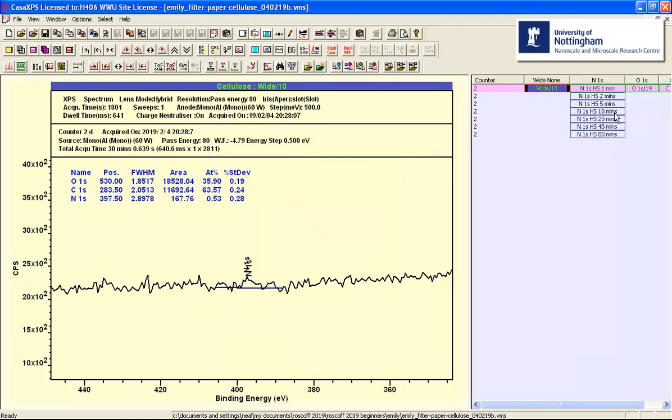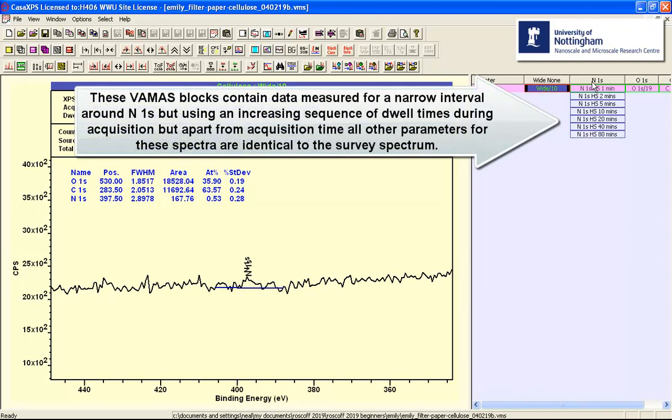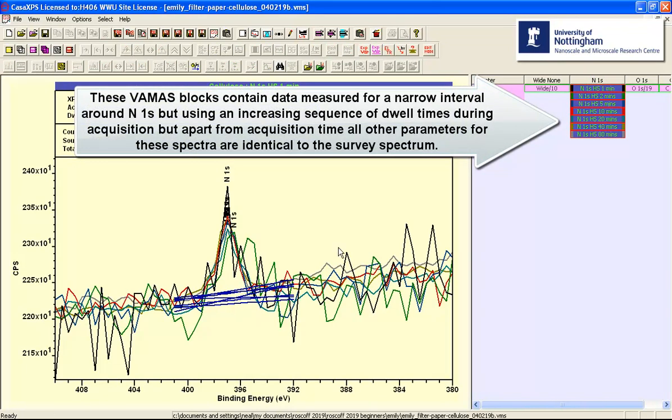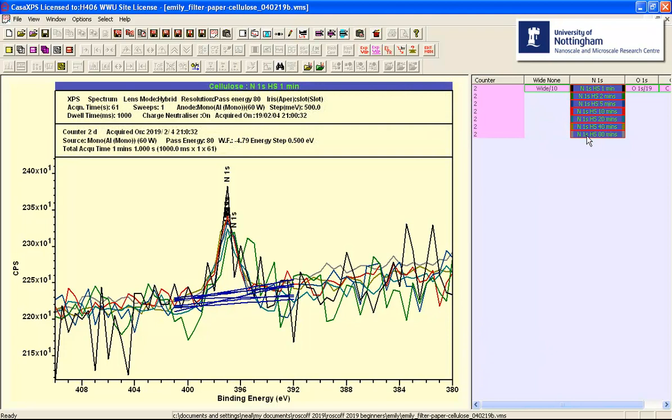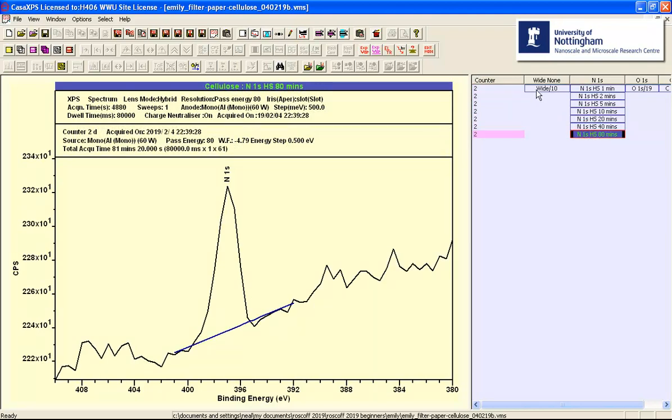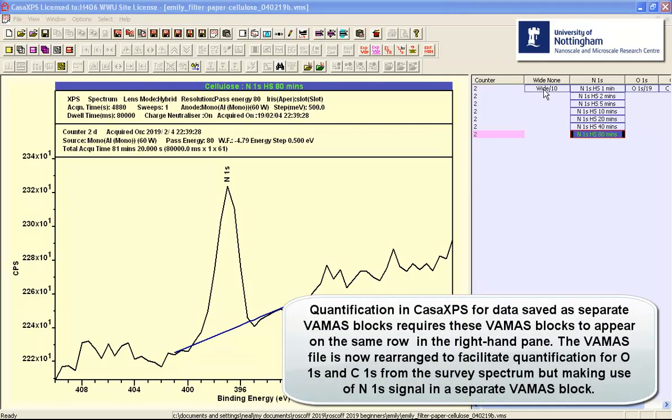However, we can alter the calculation by rather than using the nitrogen peak here, we could use one of these nitrogen peaks. And these are all nitrogen that have been measured using the same conditions as the survey spectrum, but with an ever increasing acquisition time. So the signal to noise should improve as we increase the acquisition time and we need to now verify that we can identify a peak such as this one using the same method applied to the survey spectrum.